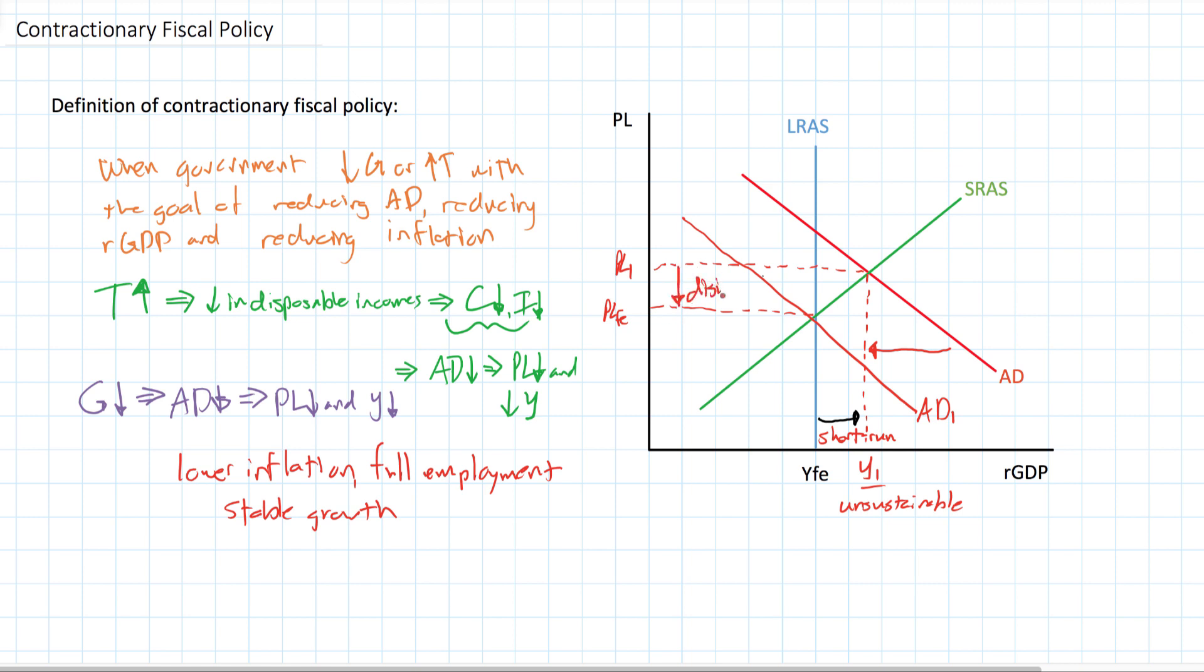So this will lead to disinflation, probably not deflation, because at PL1 this economy had very high inflation. So the goal here is not to lower the price level, rather just to reduce the rate of inflation, bring it down to a more stable level, which is one of those macroeconomic objectives.